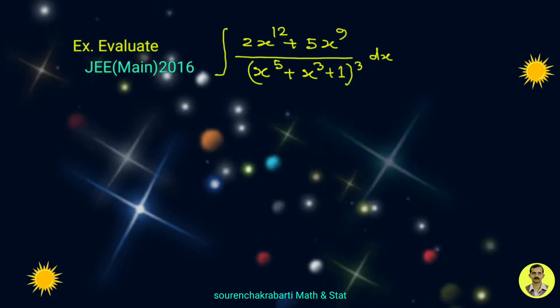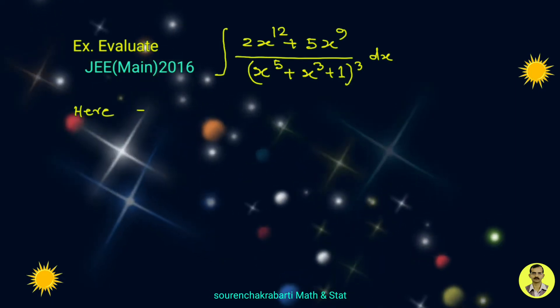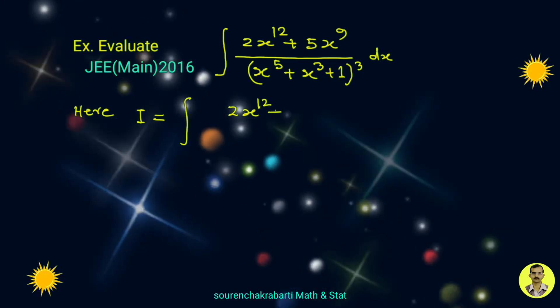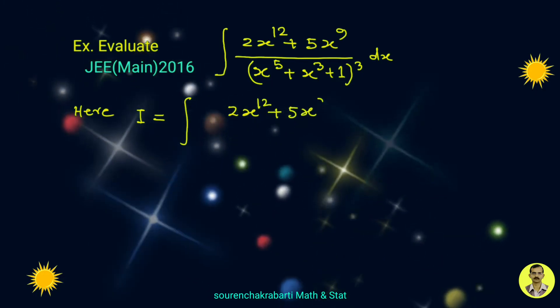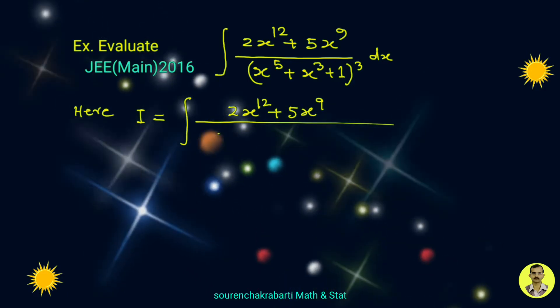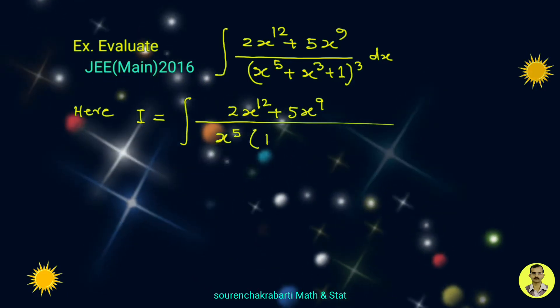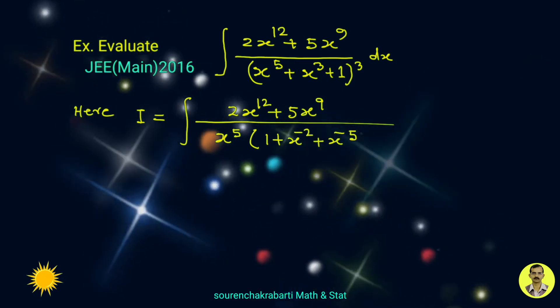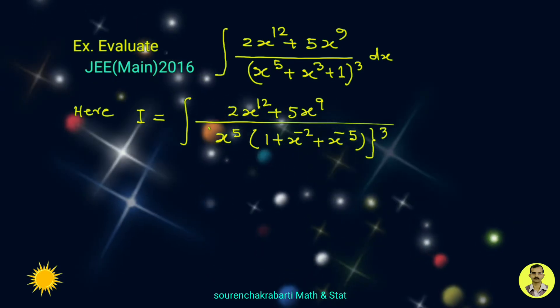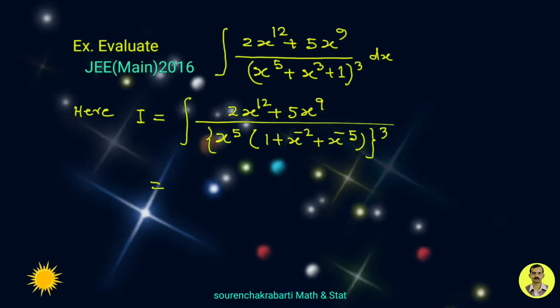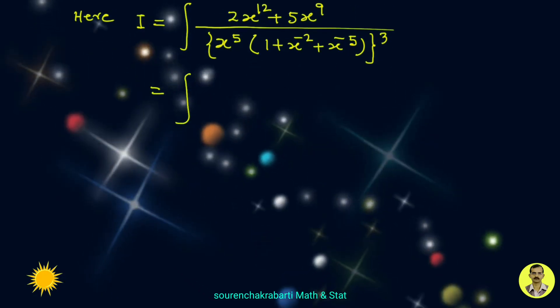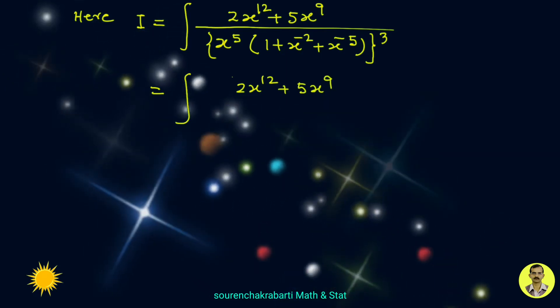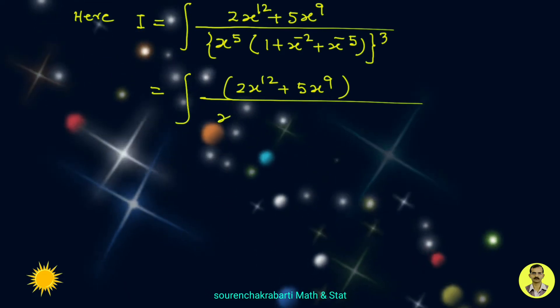Here I equals the integral of 2x to the power 12 plus 5x to the power 9. By taking common x to the power 5, we have 1 plus x to the power minus 2 plus x to the power minus 5, whole cubed. This equals the integral of 2x to the power 12 plus 5x to the power 9, divided by x to the power 15.